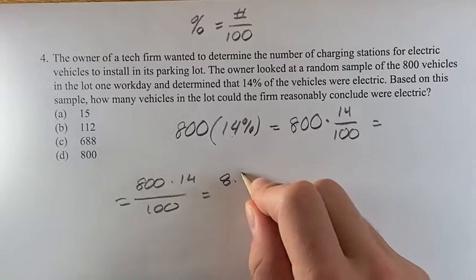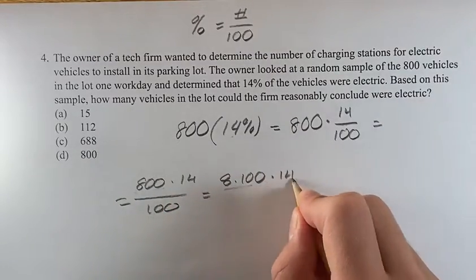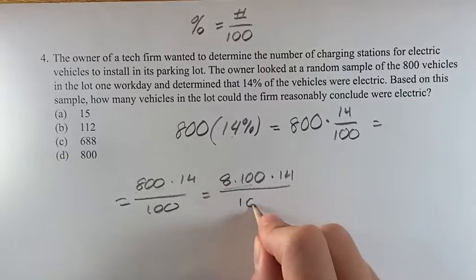all you have to know is that 8 times 100 is equal to 800. That's being multiplied by 14 and divided by 100.